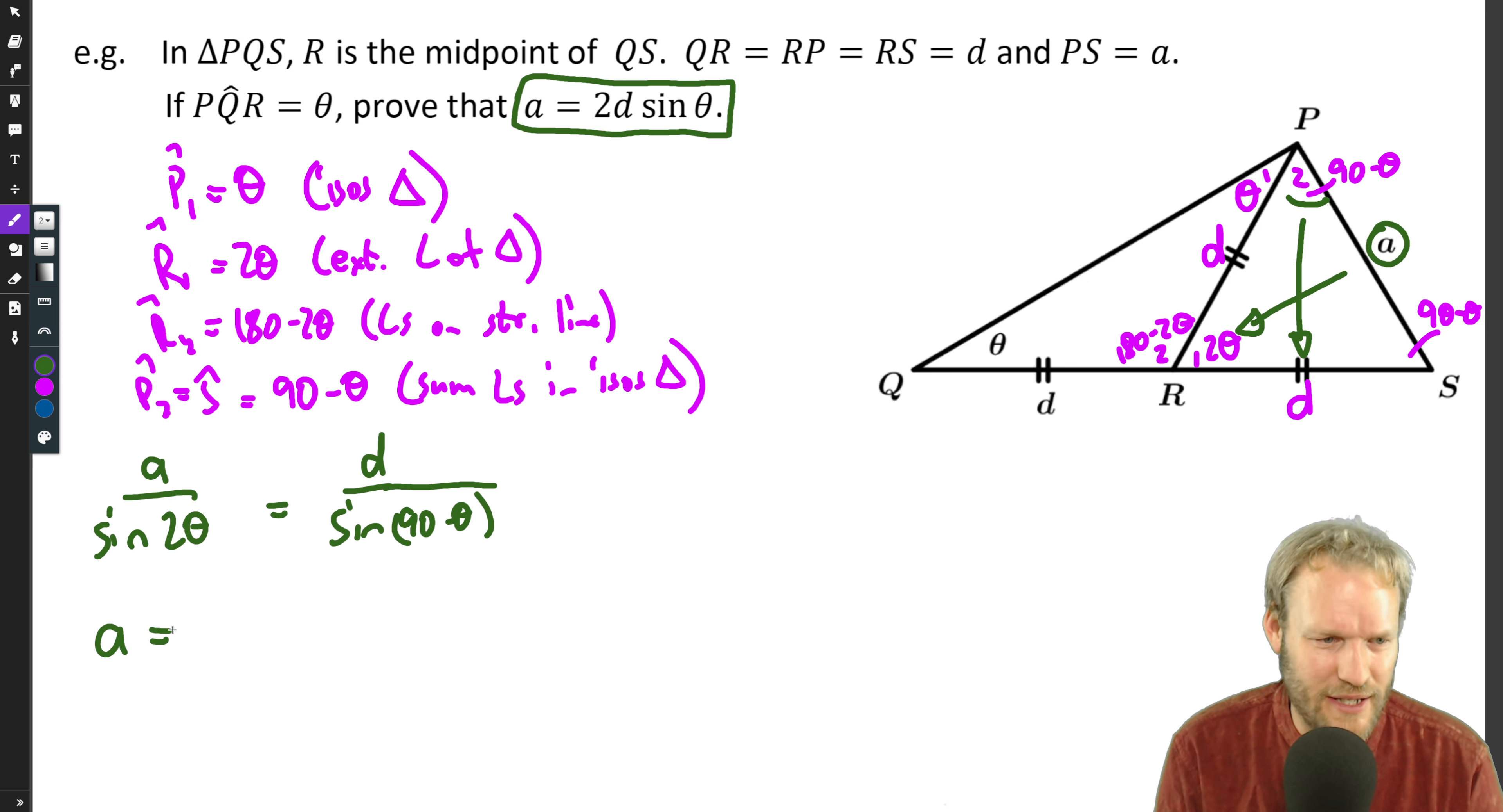We're trying to find a, so I'm going to make a the subject of the formula by multiplying both sides by sine 2 theta. It feels like we're almost there, but the final thing is 2d sine theta, not 2 theta, and no sine 90 minus theta. Well sine 90 minus theta, that's just cosine theta from our co-ratios. Sine 2 theta we can write as 2 sine theta cosine theta from our double angle formula.